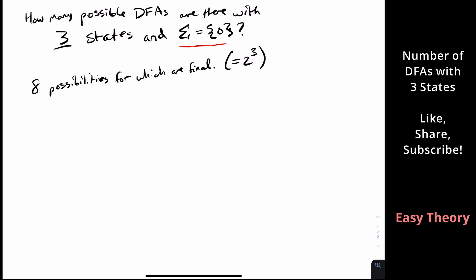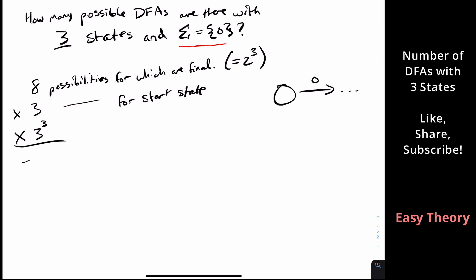How many possibilities are there for the start state? The start state can be any one of the three possibilities — so three possibilities for the start state. For the transitions, each state has only a single transition since the alphabet is unary, meaning for each state we have three possibilities of where the transition can go. Since there are three states, that's three to the power of three. The total is 8 times 3 times 27, which is a gigantic number.